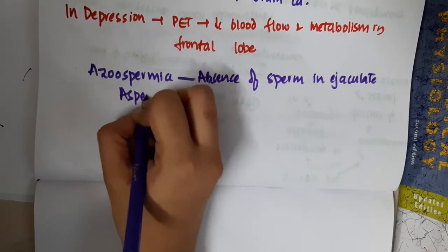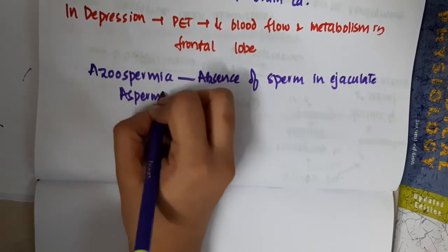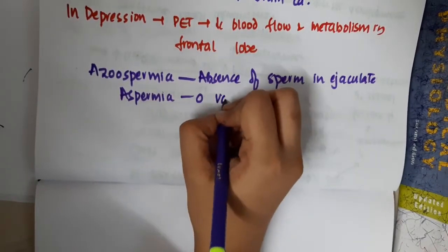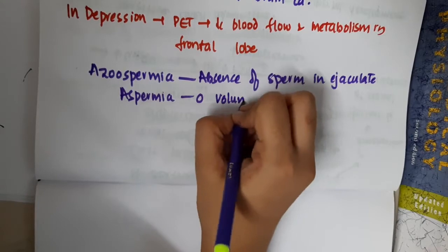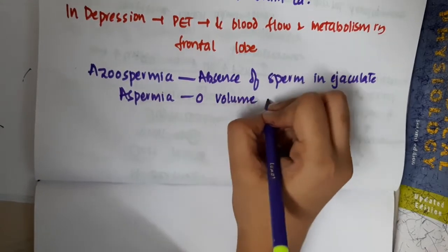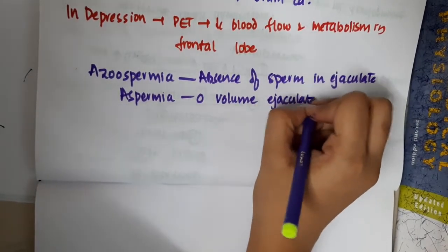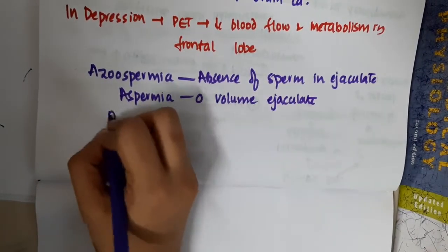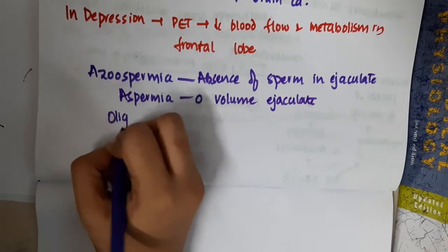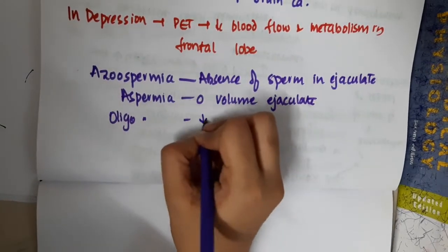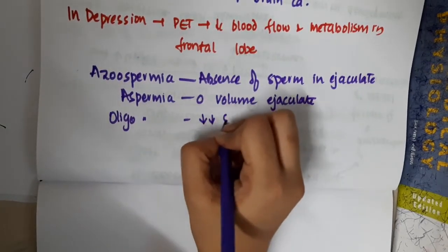Azoospermia is zero volume ejaculate — there is no volume in the ejaculate. Then we have Oligospermia, that is low sperms.